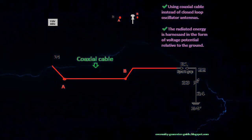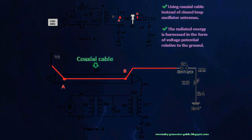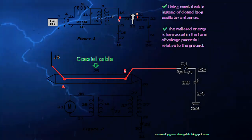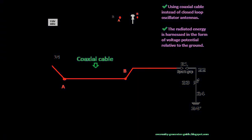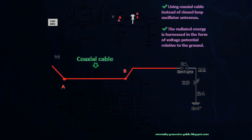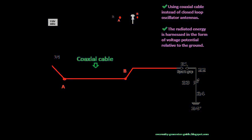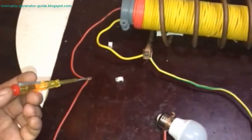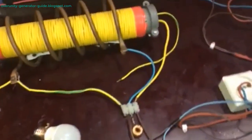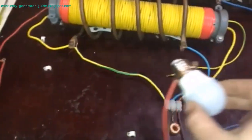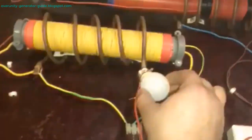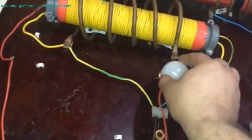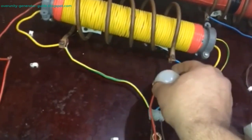The implications of Prentice's device and its modern interpretations are profound. By exploiting free energy from the Earth's energy sea, the electric accumulator offers the possibility of generating significant power with minimal input, potentially revolutionizing the energy industry. This method could lead to the development of self-sustaining energy systems, reducing reliance on traditional power sources and decreasing the environmental impact of energy production. Moreover, the use of the reverse Tesla coil in combination with a coaxial cable collector could pave the way for new advances in energy harvesting technology, with devices capable of powering homes, businesses, and even cities using ambient energy.